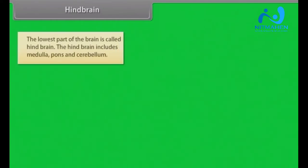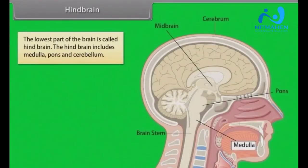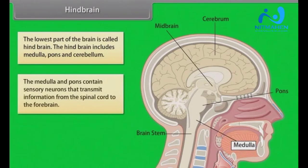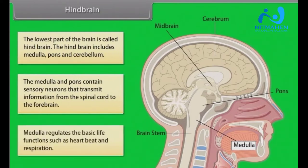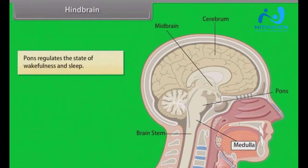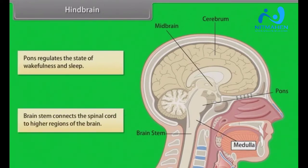The lowest part of the brain is called the hindbrain. It includes the medulla, pons, and cerebellum. The medulla and pons contain sensory neurons that transmit information from the spinal cord to the forebrain. The medulla regulates basic life functions such as heartbeat and respiration. The pons regulates the state of wakefulness and sleep. The brain stem connects the spinal cord to higher regions of the brain.